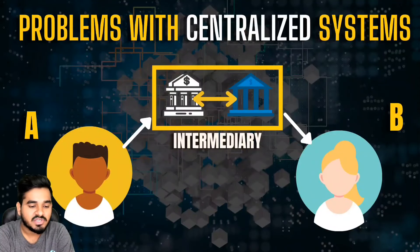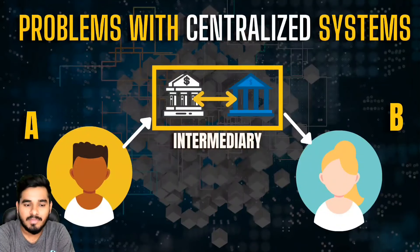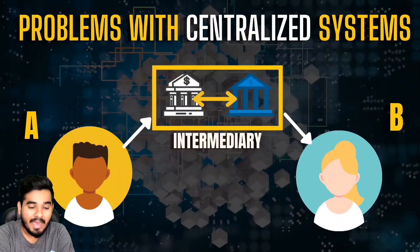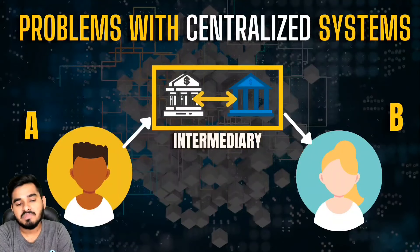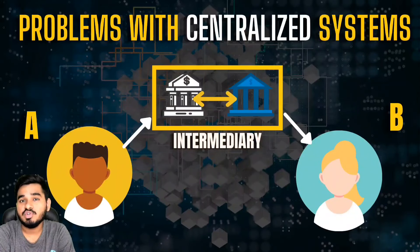Consider another example: you are transferring money from your country to an individual in another country, say the United States. What you actually do is go to the bank or transfer money online using net banking. They will charge some fee for converting your currency. There is an intermediary — your bank — which communicates with the other person's bank, and once the money is converted to their currency, the receiver gets the money. It's a long process with two banks involved.